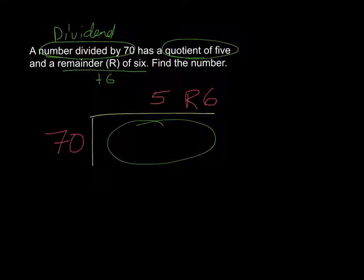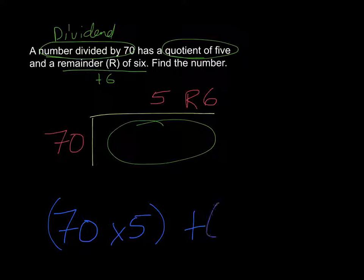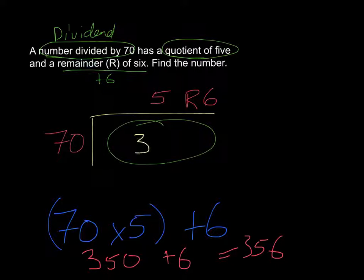Thinking about it, look back at how we checked our work before. On the previous problems, what we did is 70 times 5 plus 6. Because remember, I am taking these two and multiplying them and then adding what's remaining. 70 times 5 I know is 350. And I'm adding 6. So I have 356. And that is my missing number.